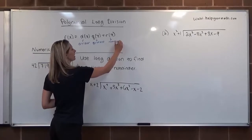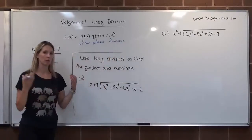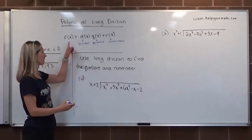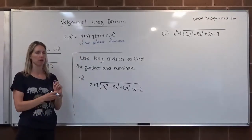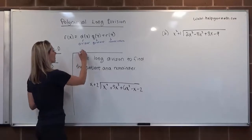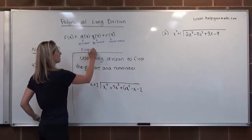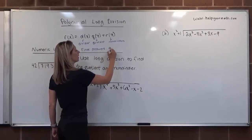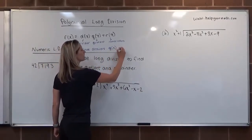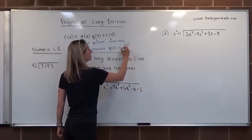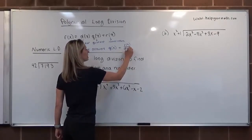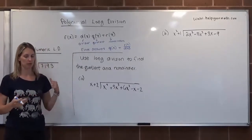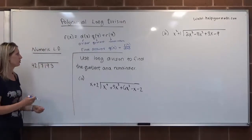When we write our final answer, we generally just give what the division led us to — we don't include the given function or the divisor. So typical final answers will be of the form: the quotient plus the remainder polynomial divided by the divisor, if there is a remainder. This looks a little weird, so let's do an example with numbers to tie the two things together.